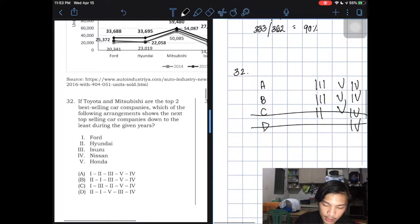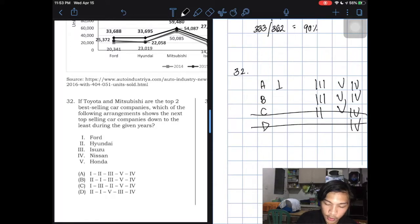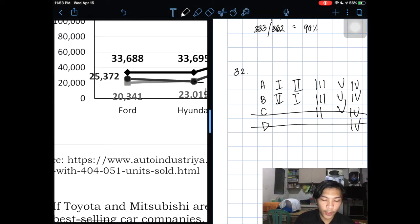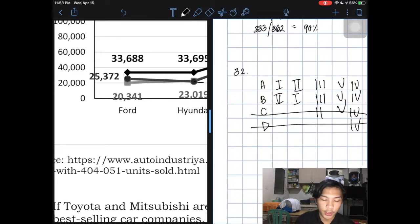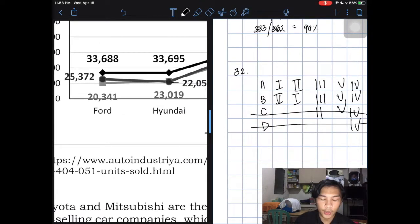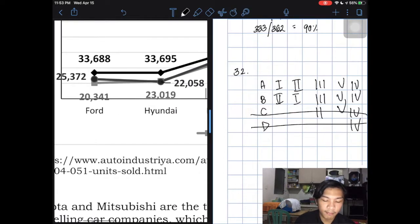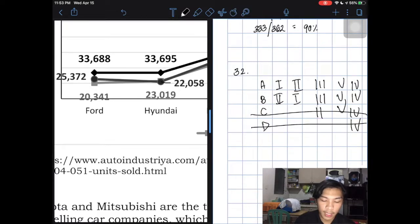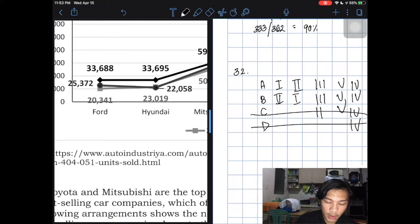Next is Isuzu, which is 3. Here it's 3, 3, and then 2. So automatic eliminate letter C. Now, what's left is either Ford is first or Hyundai is first. Check here. Ford has 33,688, 25,372, and then 20,341. On the other side, we see 33,695, 22,058, 23,019. When we add these values, we can see that Hyundai is higher overall.